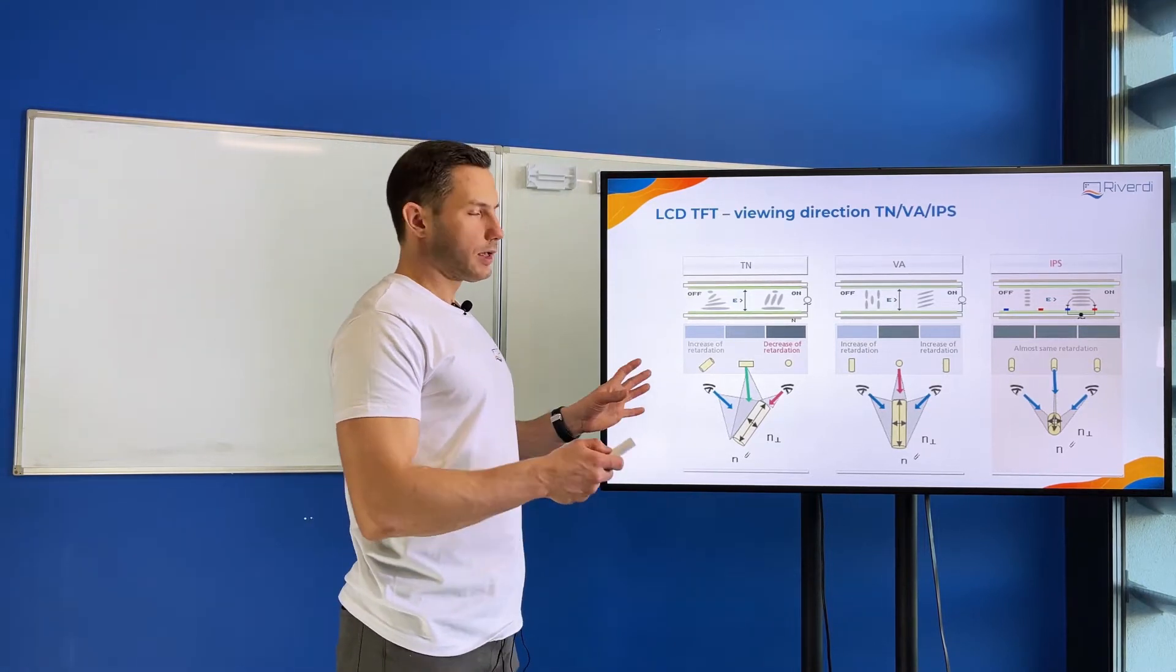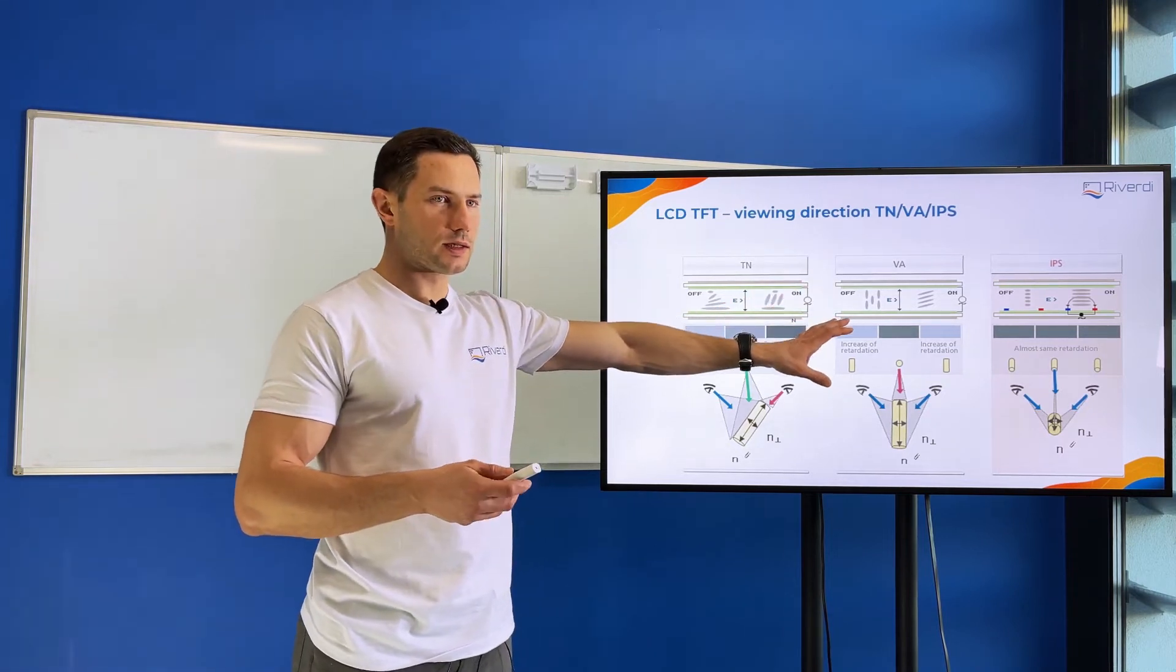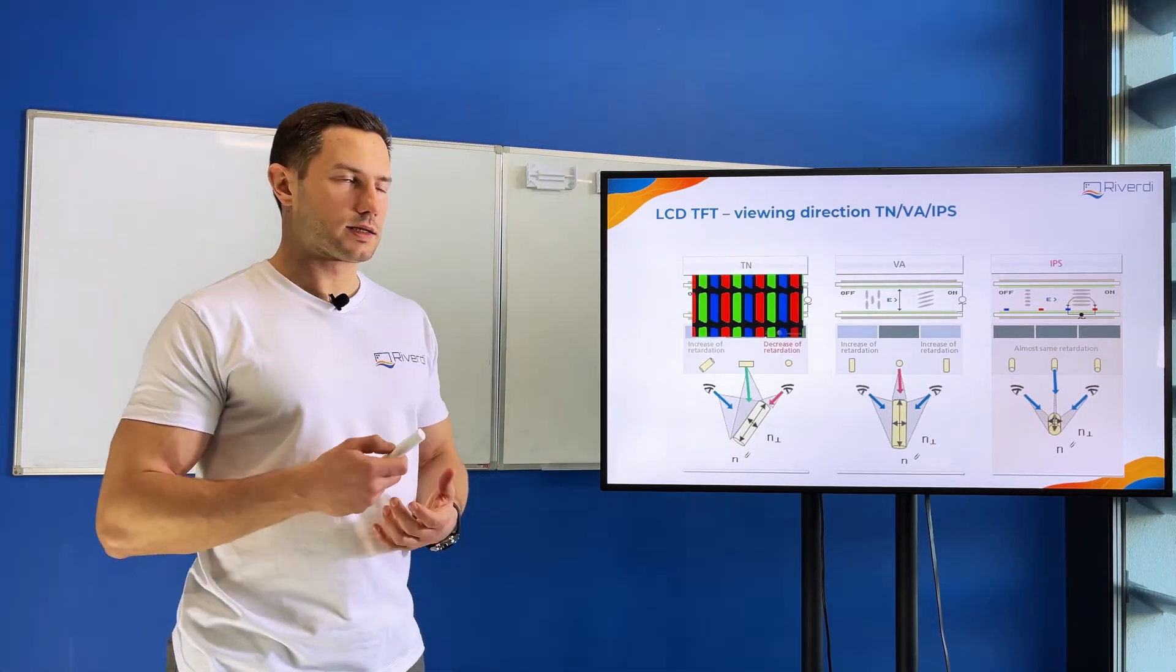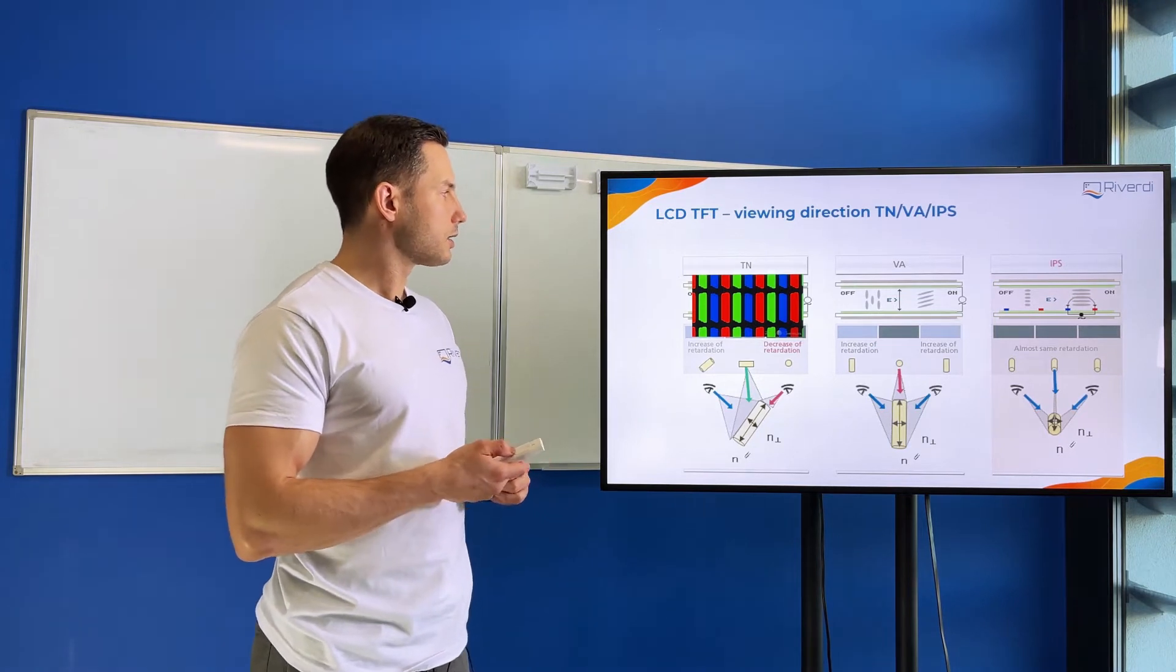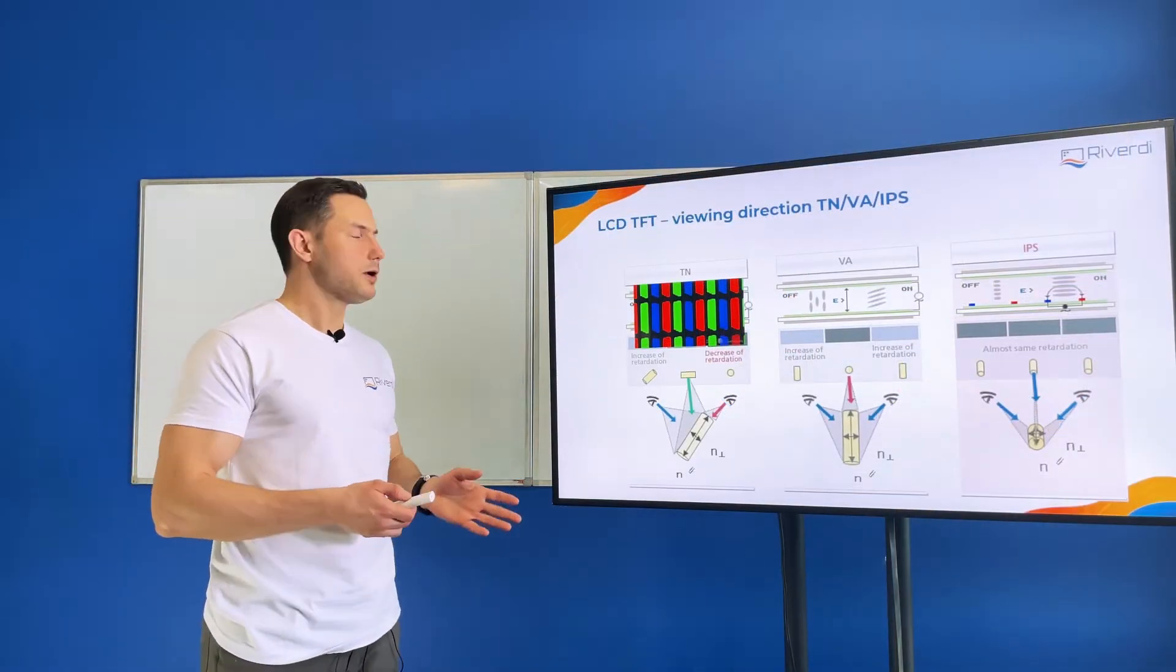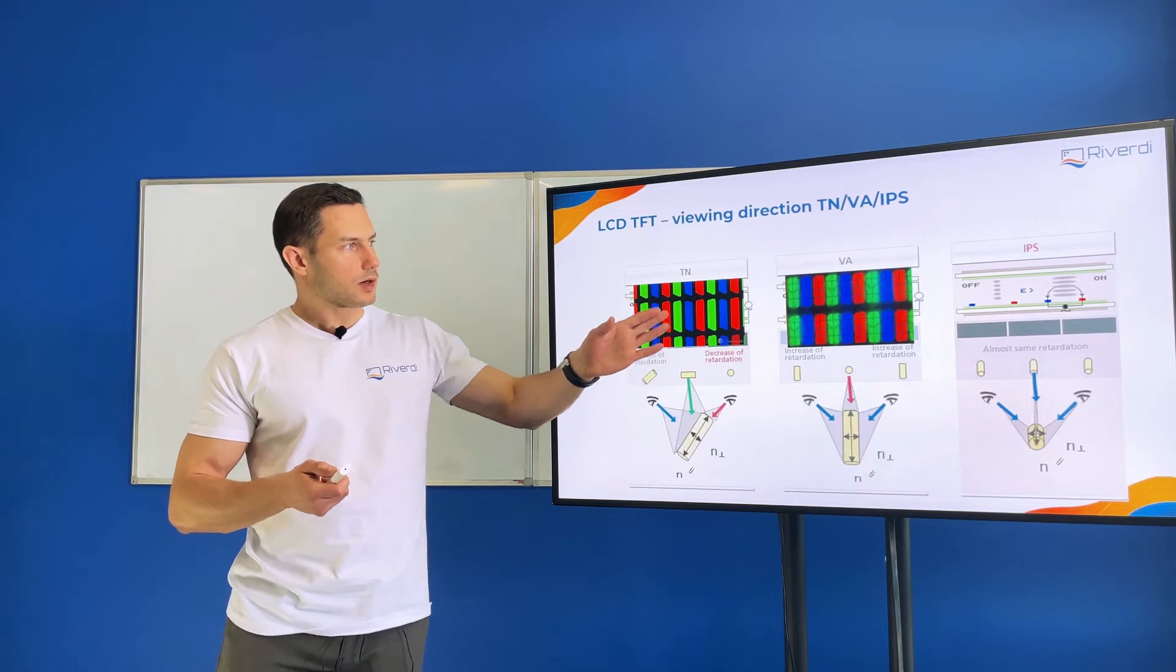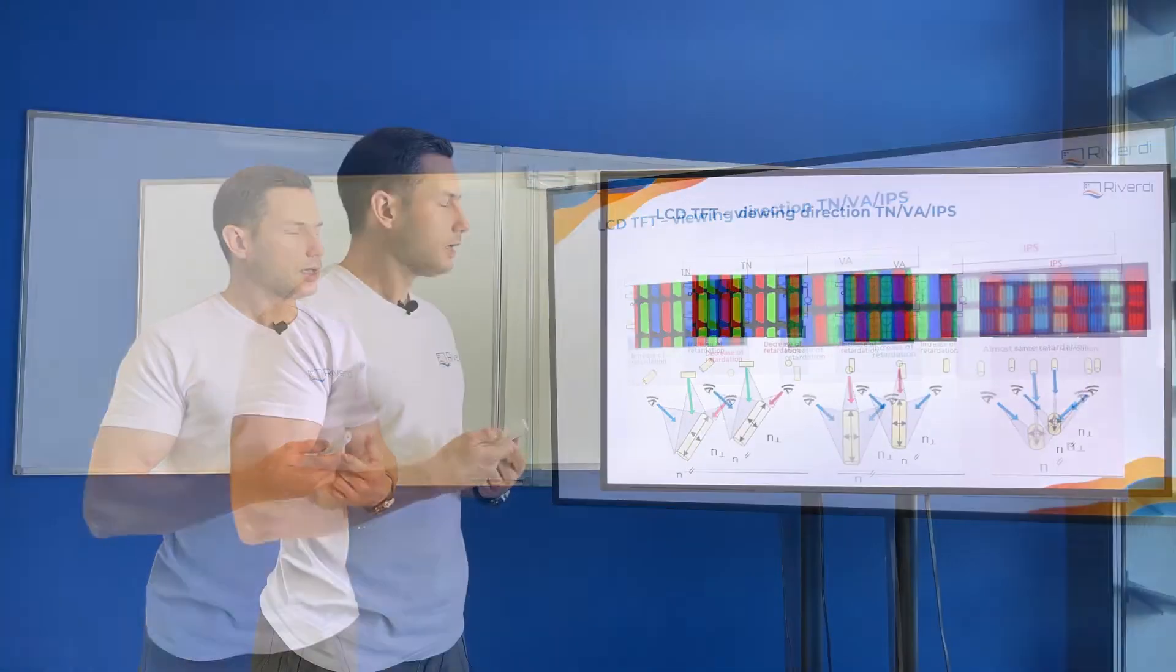And besides the different organization of the liquid crystal inside for VA and IPS, we also organize the sub-pixels a little bit differently. So when we look at the TN, the simplest TN display, we will just see the sub-pixels with the color filters that we talked about.